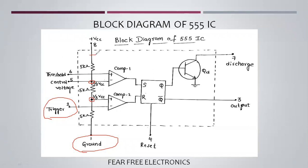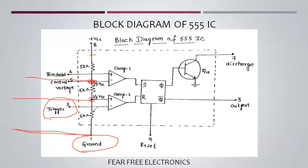VCC is divided by the 3 equal five-kilo-ohm resistors. The voltage at the top point is 2/3 VCC and the lower reference point is 1/3 VCC. For example, if VCC is 6V, then 2/3 VCC is 4V and 1/3 VCC is 2V. Each five-kilo-ohm resistor drops 2V. The potential divider divides the voltage into these reference levels.